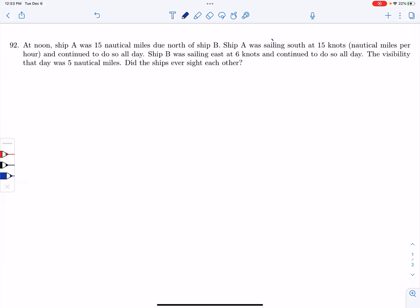So it says ship A was 15 miles north of ship B. So ship B down here, that distance is 15. And I'm going to change everything from nautical miles and knots to miles and miles per hour. So 15 miles there.